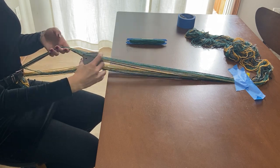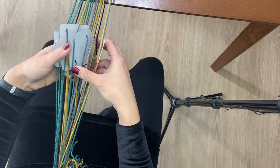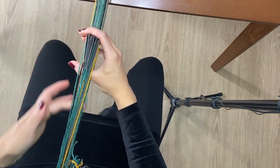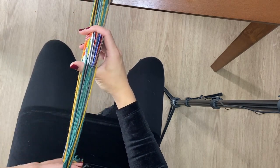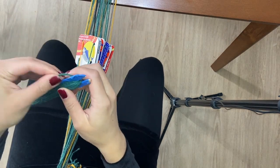At this point make sure that all the cards are aligned and that all of them have the same letters pointing up. The cards should create a space between the yarns called shed. We start by placing the weft in this shed.